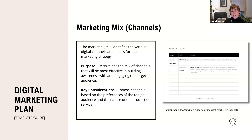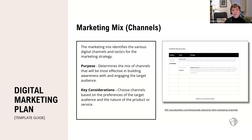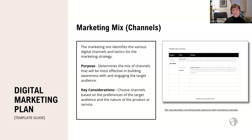The marketing mix section covers what channels you're going to use and how you're going to communicate. There are different categories — some are traditional channels, some are specific activities like a trade show or event; social media would be a category. Under each category, identify your strategy, then get specific with tactics. For example, if social media is a category, discuss how you'll use it generally, then for Facebook specifically, because each channel has its own strategy.